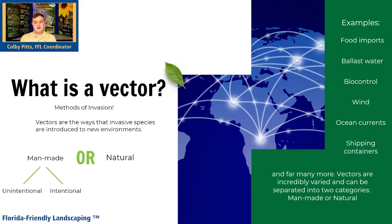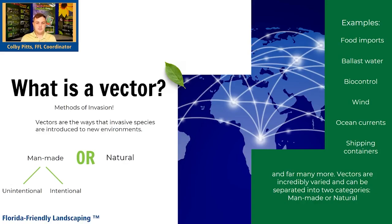What is a vector? A vector is the method of invasion — the way that invasive species are introduced to environments. These can be split into two main categories: natural and man-made. Natural vectors are things like ocean currents, wind, or other animals. For instance, a bird eats a seed, carries it, deposits it, and the plant grows. That's a vector.